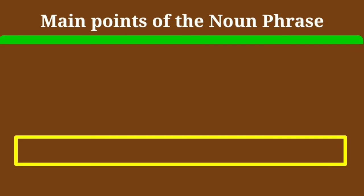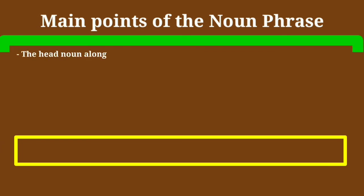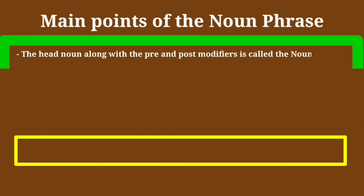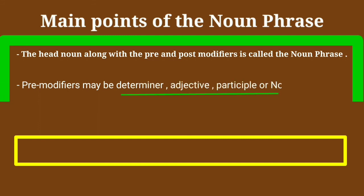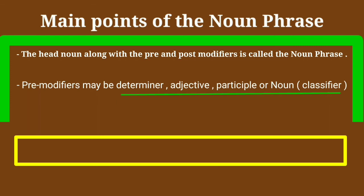Main points of the noun phrase: The head noun along with the pre- and post-modifiers is called the noun phrase. Pre-modifiers may be determiner, adjective, participle, or noun — that we call it a classifier — which functions as an adjective.